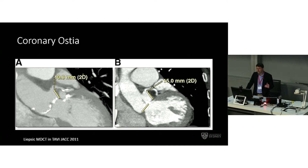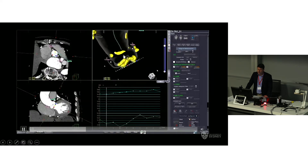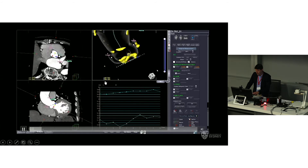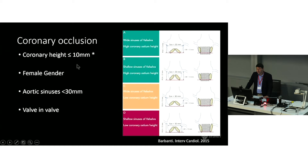We also need to measure the distance from the valve to the coronary ostia. When the catheter valve is placed, the native leaflets are pushed upwards, and there is potential for obstructing the coronary ostia — so you ideally want a large distance and a big sinus. A low coronary height of 10 millimetres or less is definitely a risk factor. Female gender, small aortic sinuses, and procedures like valve-in-valve significantly increase the risk of coronary obstruction, though interventional techniques can mitigate that risk.